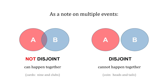Before we talk about two more rules, let's note something about multiple events. If we have events A and B, those events are not disjoint if they can happen together at the same time. For example, with a deck of playing cards, a card could be both a nine and a club — they're not disjoint. Disjoint events cannot happen at the same time, like flipping a coin — you can't have both heads and tails.